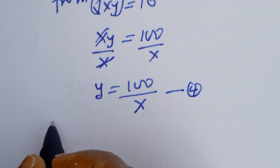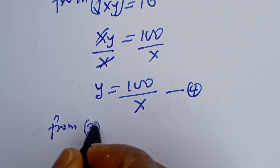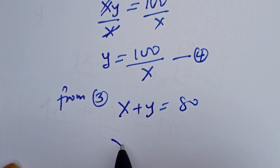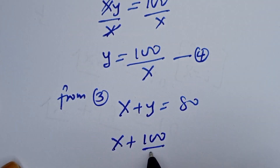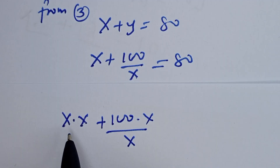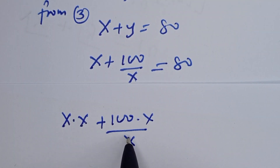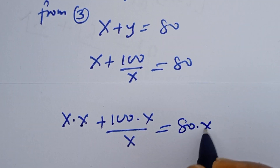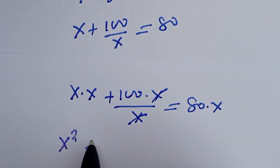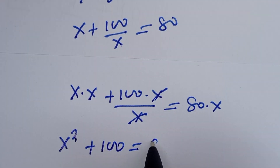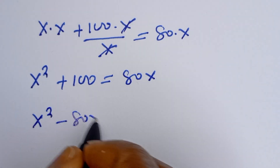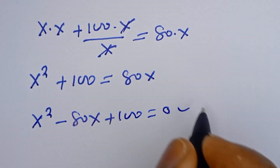Now substitute equation 4 into equation 3. From equation 3, x plus y is equal to 80. Substituting y equals 100 over x: x plus 100 over x is equal to 80. To eliminate the fraction, multiply through by x: x times x plus 100 times x divided by x is equal to 80 times x. This gives x squared plus 100 is equal to 80x, or x squared minus 80x plus 100 is equal to 0. This is a quadratic equation.